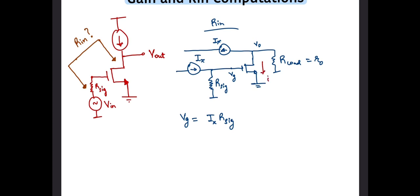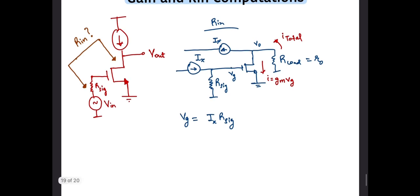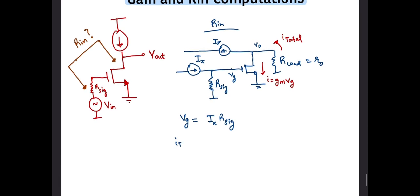The ix current sourced at the gate is constrained to flow through R_sig, thus developing a voltage of ix times R_sig at the gate. This gate voltage forces the transistor to pull a current of gm times ix times R_sig. We can apply KCL at the output node and notice that the total current flowing through the load resistor, I_total, is ix plus gm times ix times R_sig. That would generate an output voltage of minus I_total times R_load.